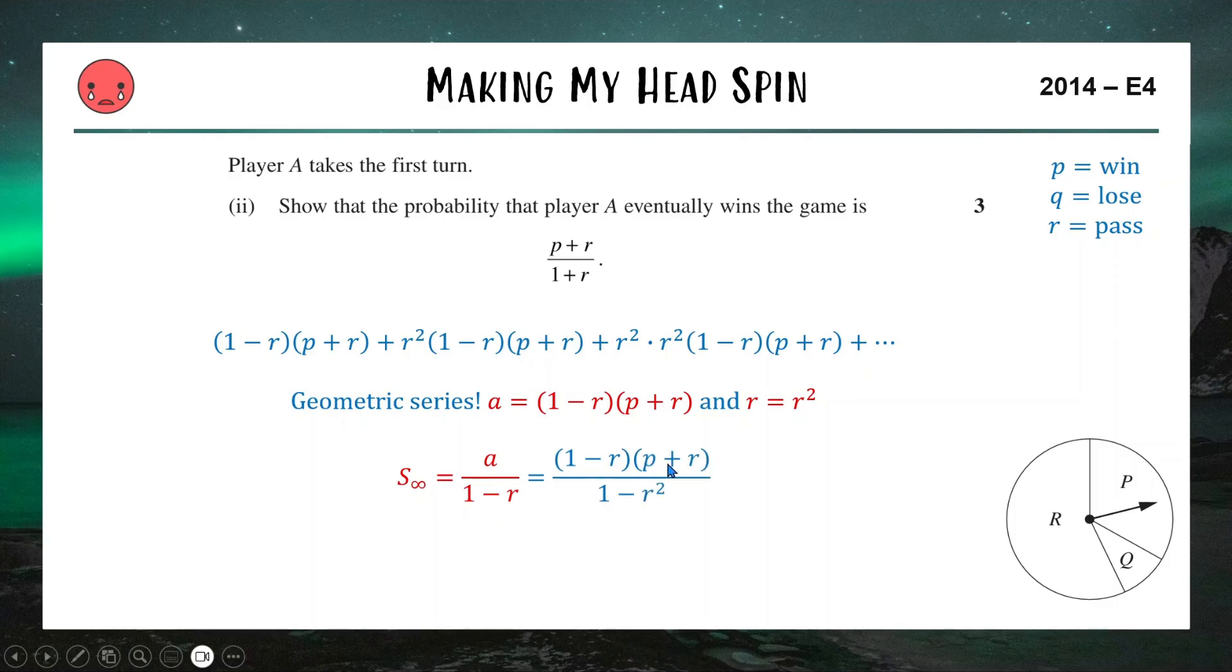So on the top, one minus R P plus R. On the bottom, one minus R squared. We're trying to get this thing here with just a one plus R on the bottom. So what we're going to do is we're going to factorize the bottom using a difference of squares. And now it's super easy because we have a one minus R on top and bottom of the fraction, so we can cancel those away. And that leaves us with P plus R on the top, check. And one plus R on the bottom, check. And there is your three marks.